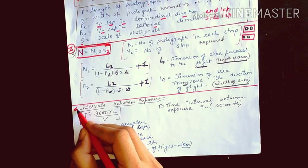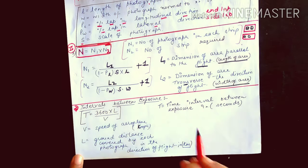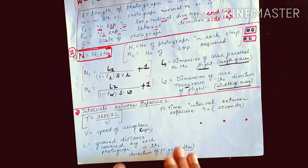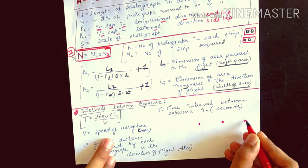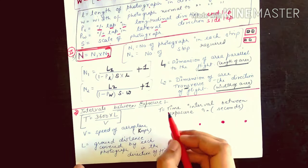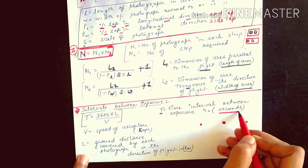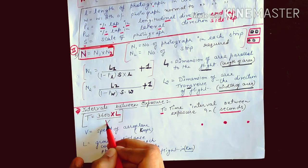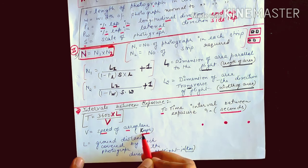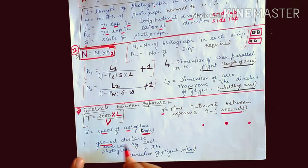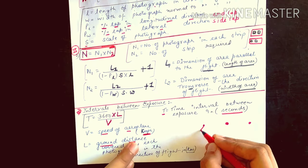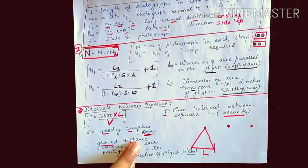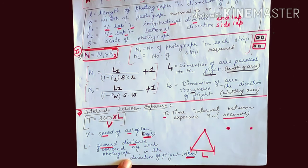The third formula in flight planning is the interval between exposures. The formula is: T = 3600 × L / V, where T is the time interval between exposures in seconds, V is the speed of the aircraft in kilometers per hour, and L is the ground distance covered between each exposure station (in kilometers).